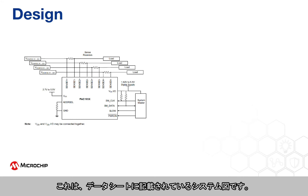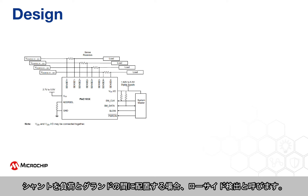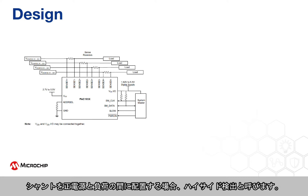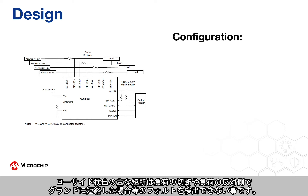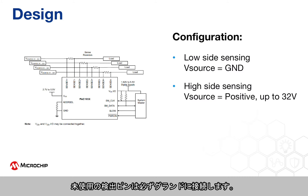This is the system diagram presented in the datasheet. Low-side and high-side sensing refers to the placement of the shunt. When the shunt is placed between the load and the ground, it is called low-side sensing. If the shunt is placed between the positive supply and the load, it is high-side sensing. The main disadvantage of low-side sensing is the inability to detect faults, such as a disconnected load or a short circuit to ground on the other side of the load. High-side sensing can detect faults and is the recommended configuration. Make sure that the unused sense pins are connected to ground.